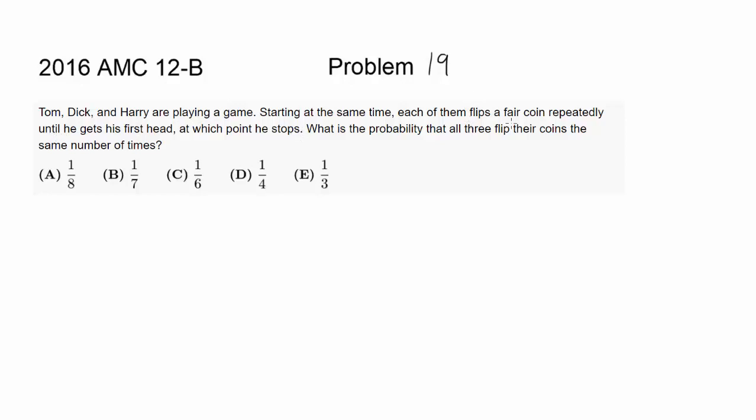Starting at the same time, each of them flips a fair coin. There is a 50% chance to get heads and 50% chance to get tails, repeatedly until he gets his first head, at which point he stops.